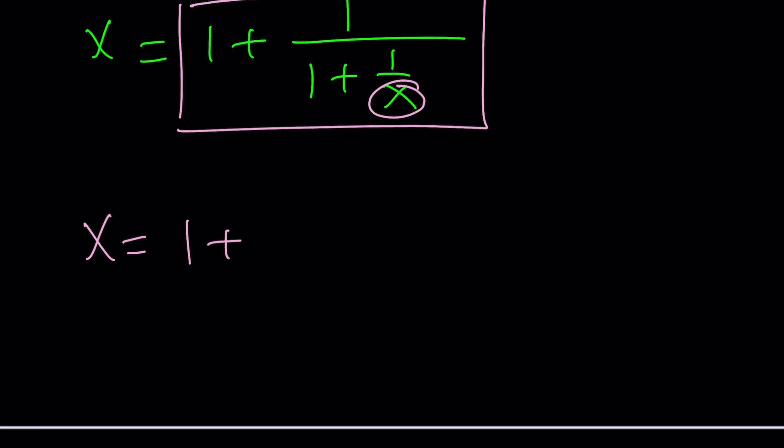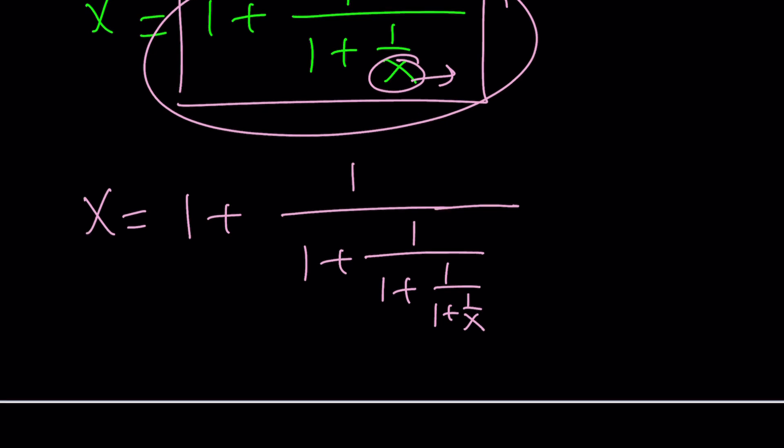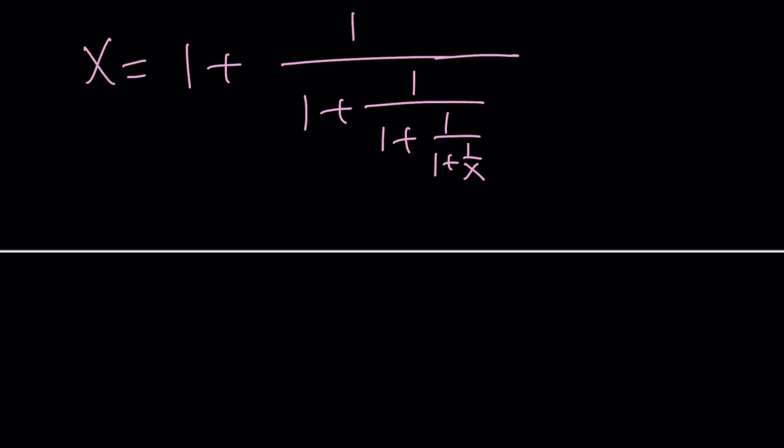x equals 1 plus 1 over 1 plus 1 over. And now this x will be replaced with this, which is 1 plus 1 over 1 plus 1 over x. You get the idea? So if you continue doing this, you're going to get something interesting at the end. You're going to get something like this. x equals 1 plus 1 over 1 plus 1 over 1 plus 1 over so on and so forth.